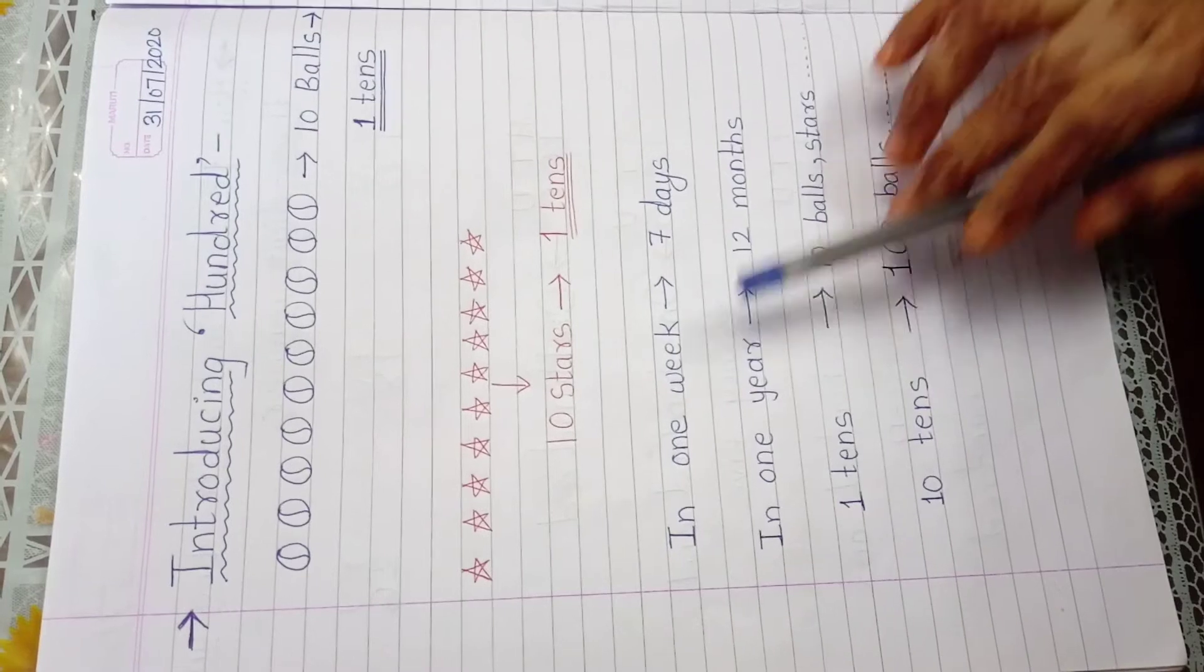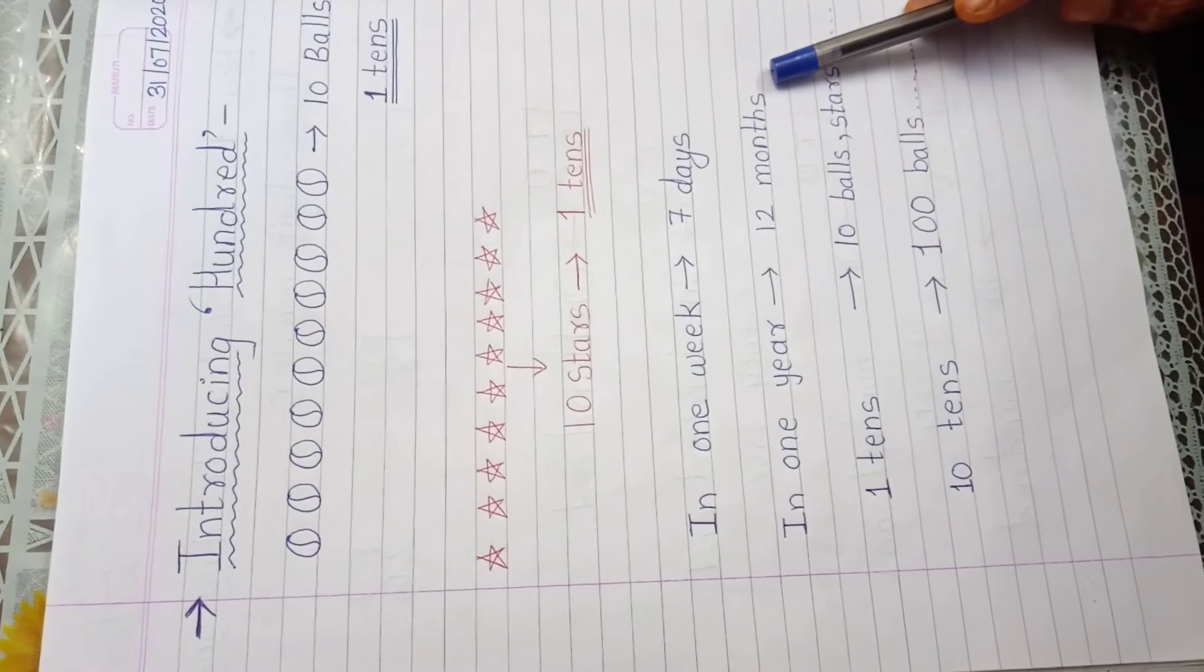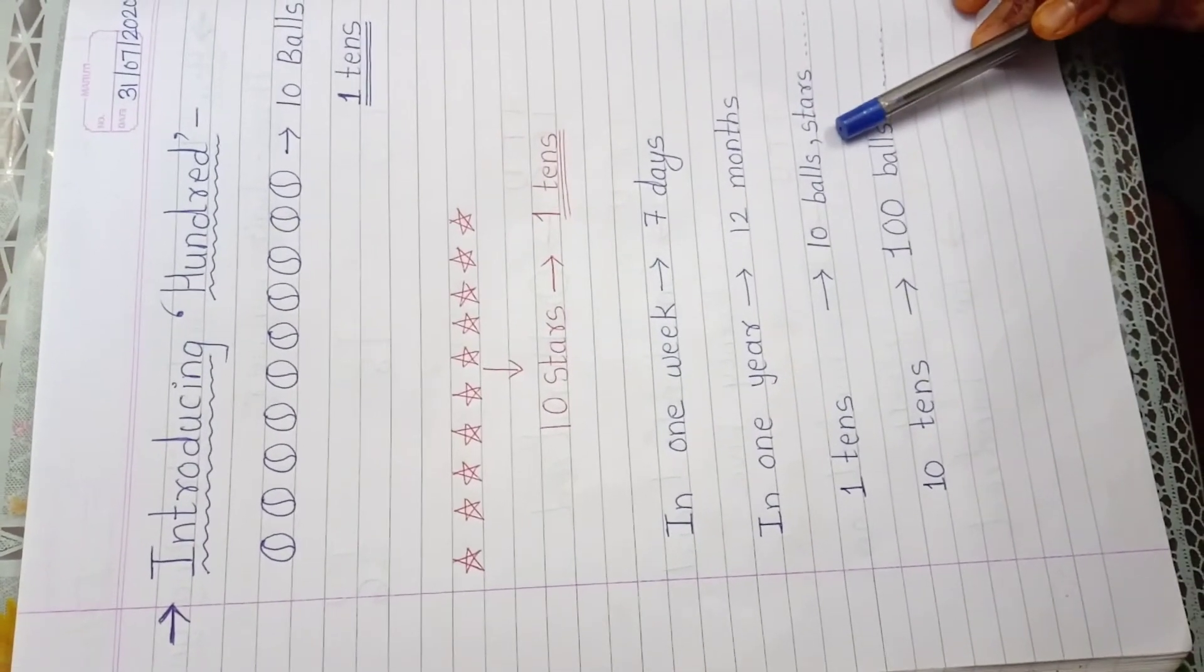1 week means 7 days. Okay. Then 1 year means 12 months. And 1 tens means 10 balls. Understand?